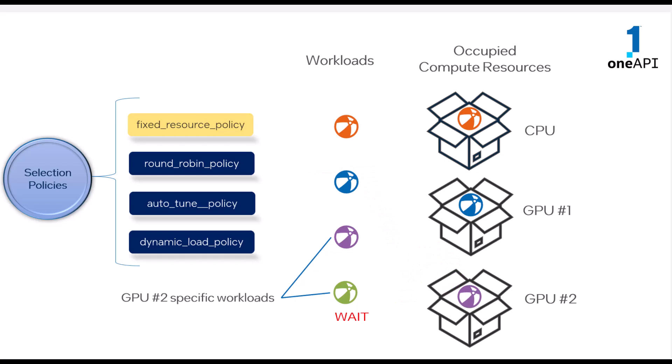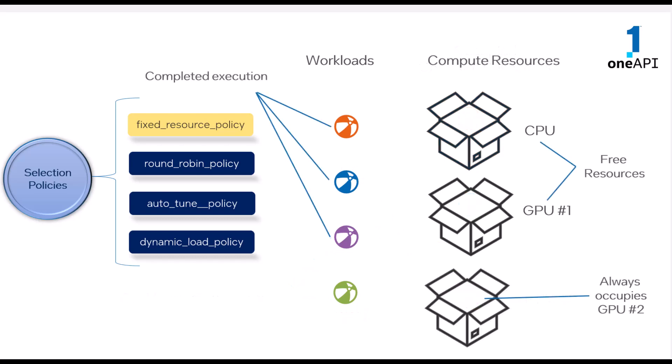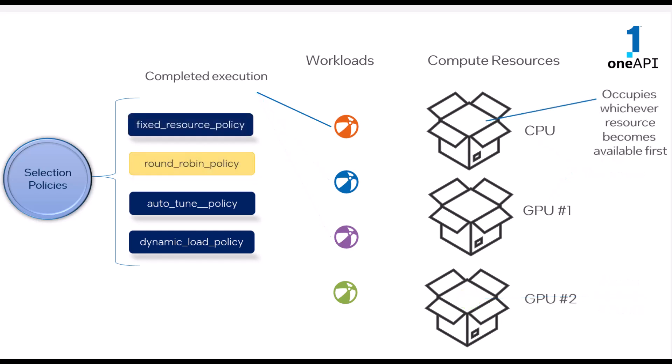Fixed resource policy always chooses the same resource for a given workload. As you can see, the fourth green-colored workload is currently in a wait state. Since it is specific to GPU 2, it will always be allocated to GPU 2, even if all resources become available once the top three workloads have completed execution. Round Robin policy rotates between the specified resources. The fourth workload will be allocated to the resource that becomes available first — here, the CPU on completion of the first workload.